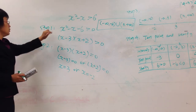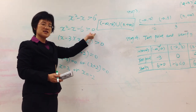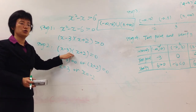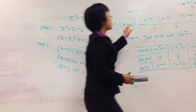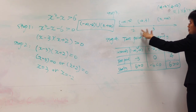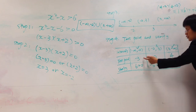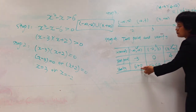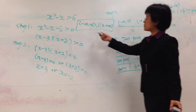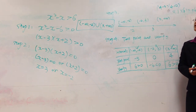Quick review — four steps. Step 1: move all terms to one side and leave the other side as 0. Step 2: find the solution for the corresponding quadratic equation. Step 3: use those solutions to divide the whole number line into several intervals. Step 4: from each interval, choose test points and use them to verify if the interval is part of the solution set or not. After these four steps, we end up with the final solution.